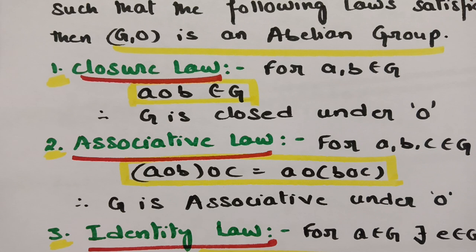To recap: if it satisfies two properties, it is a semi-group. If it satisfies three properties, it is a monoid. If it satisfies four properties, it is a group. If it satisfies all five properties, then it is an abelian group.